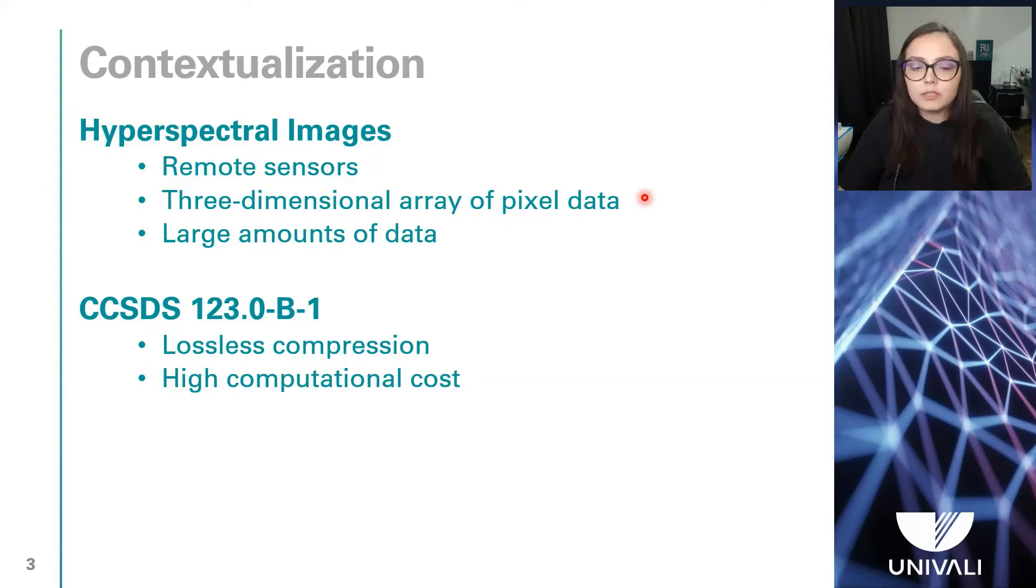Since systems onboard remote sensors have limited storage capacity, it requires data to be transmitted to the ground station. Also, communication between these platforms and ground stations has bandwidth limitations, making a compression algorithm a crucial element for these systems. These images can be lossy or losslessly compressed, and the compression algorithm must be adapted depending on the computational capability of the environment of operation.